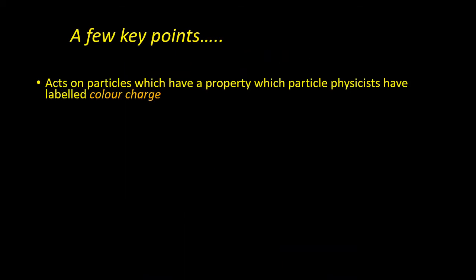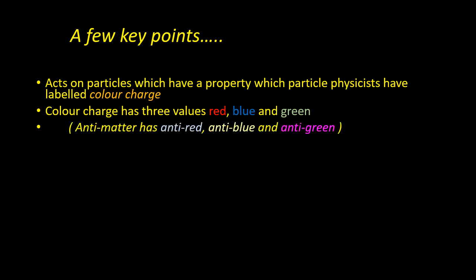The strong interaction only acts on particles which have a property which particle physicists have labelled colour charge. This actually has nothing to do with the everyday meaning of colour. It's just a label for this property. Colour charge can have three possible values, red, blue and green. And there's actually three anti-colours, which are anti-red, anti-blue and anti-green, which are normally represented as cyan, yellow and magenta.